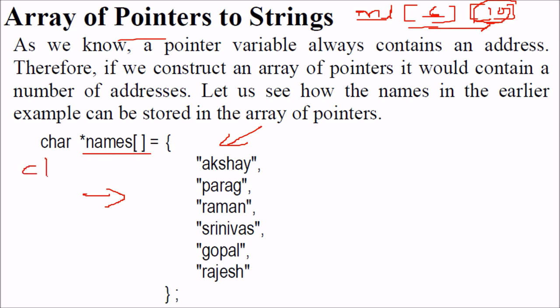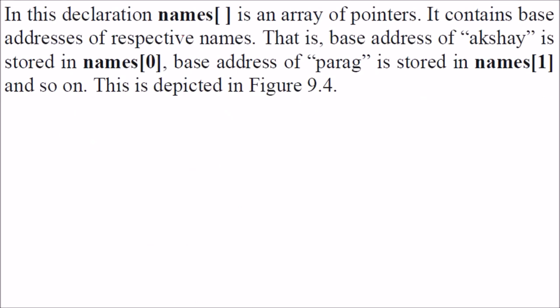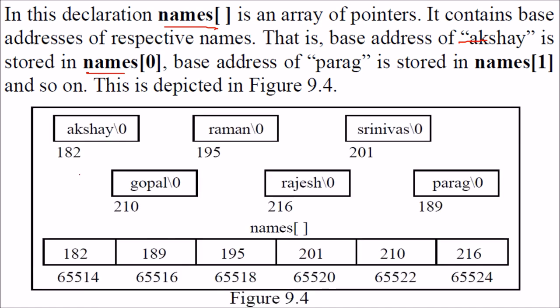it would have been char names 6 and then 10. But here, we have initialized an array of pointers. Now these are 6 names and then the name is the array of pointers, so it is containing the addresses. So name 0 is pointing to Akshay, name 1 will be to Parag and so on, so this is how.